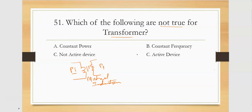The transformer is a constant power device — the power input is the same as the output. The frequency also remains constant. It uses passive devices. Passive devices include resistor, capacitor, inductor, and diode.